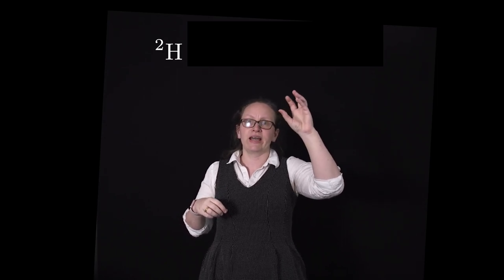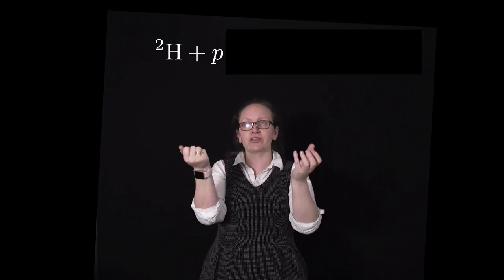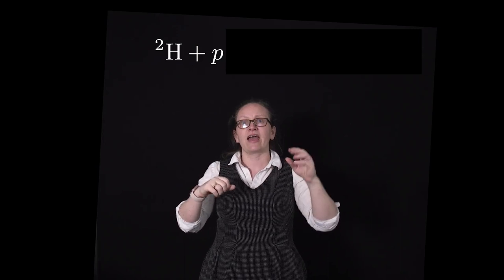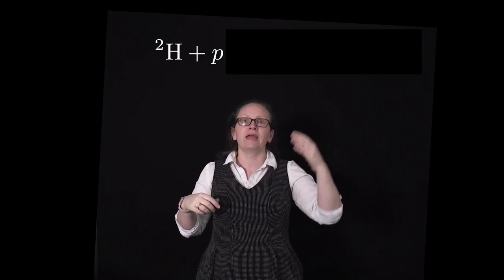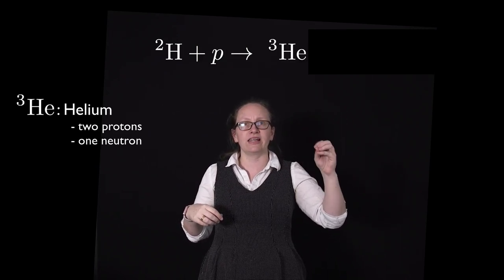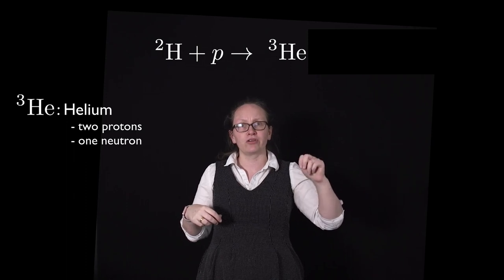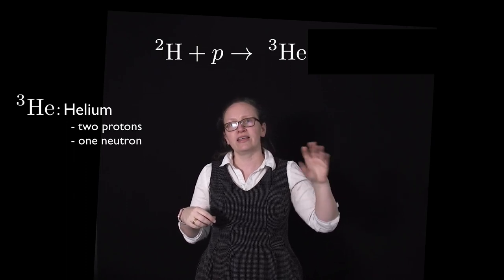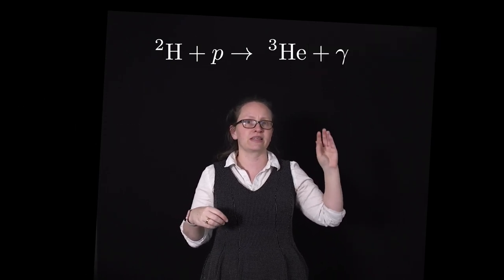That deuterium nuclei will meet another proton in the center of the Sun and it will form helium-3. So this is a helium nuclei with two protons and one neutron and in this process it also emits gamma radiation.